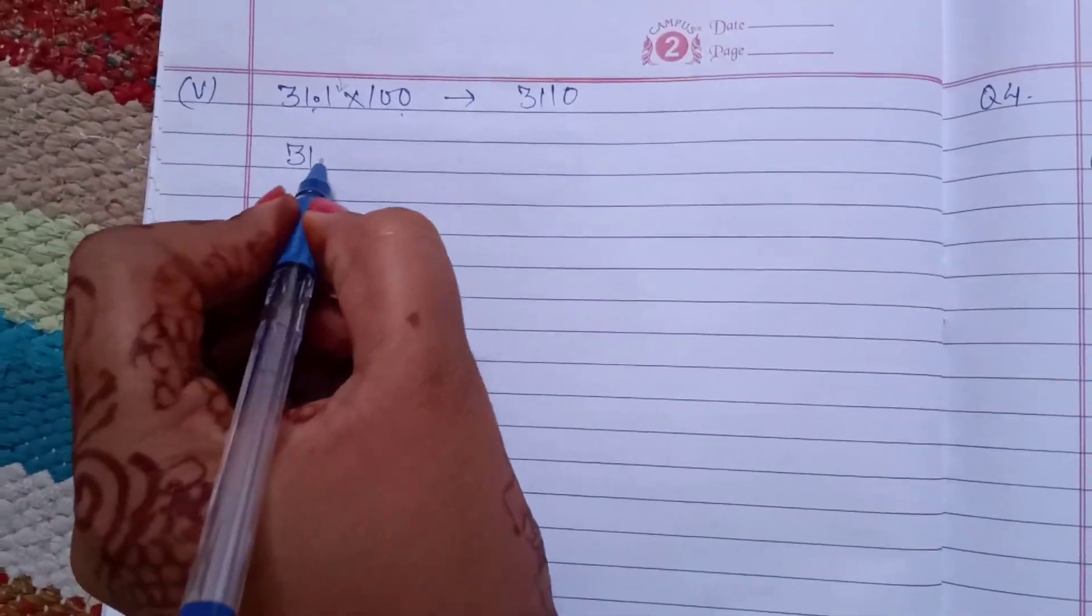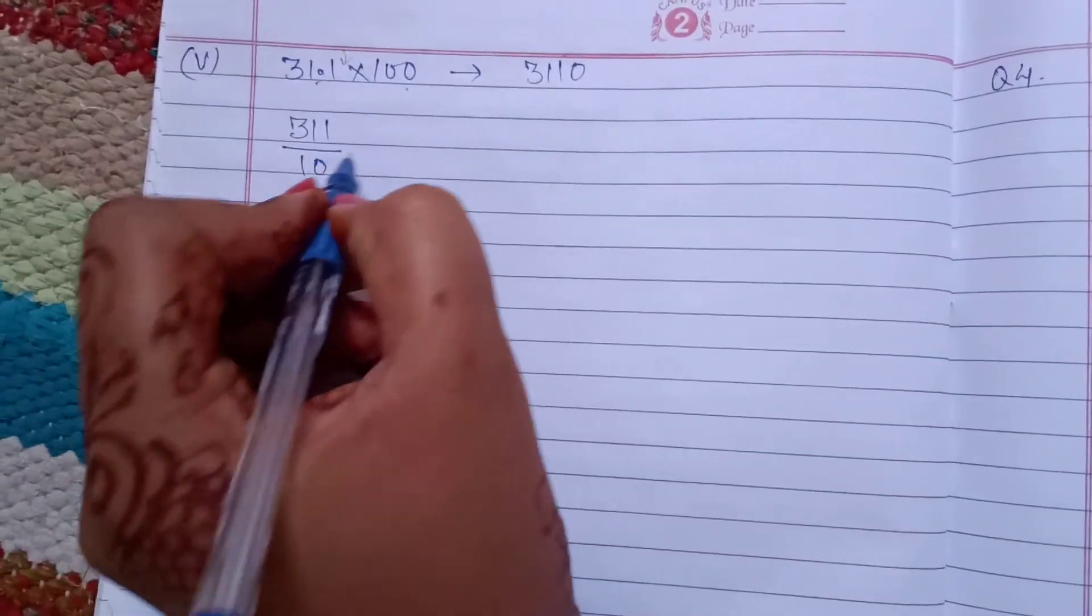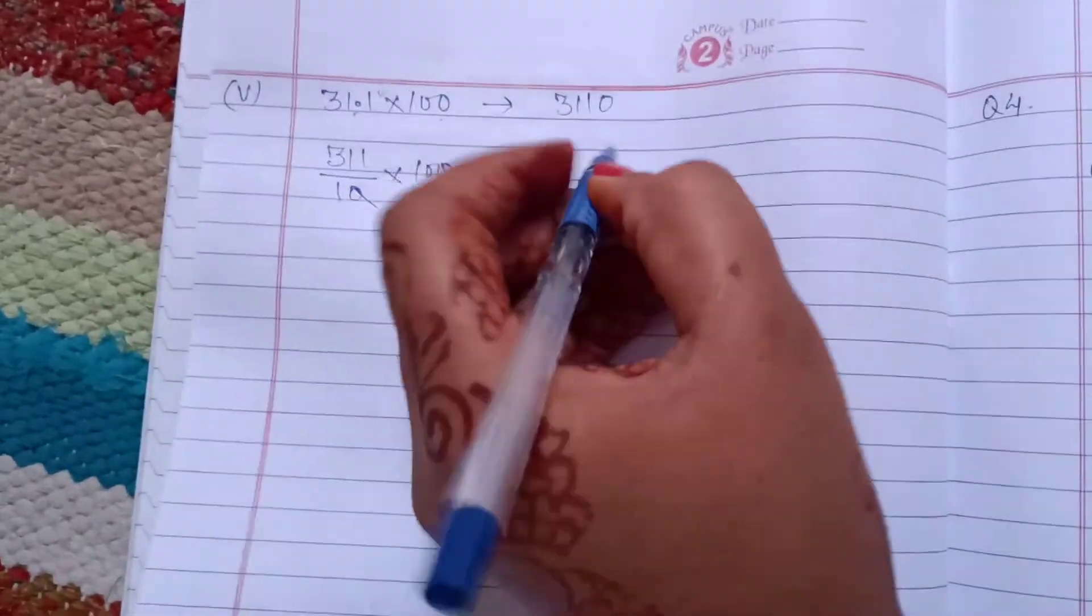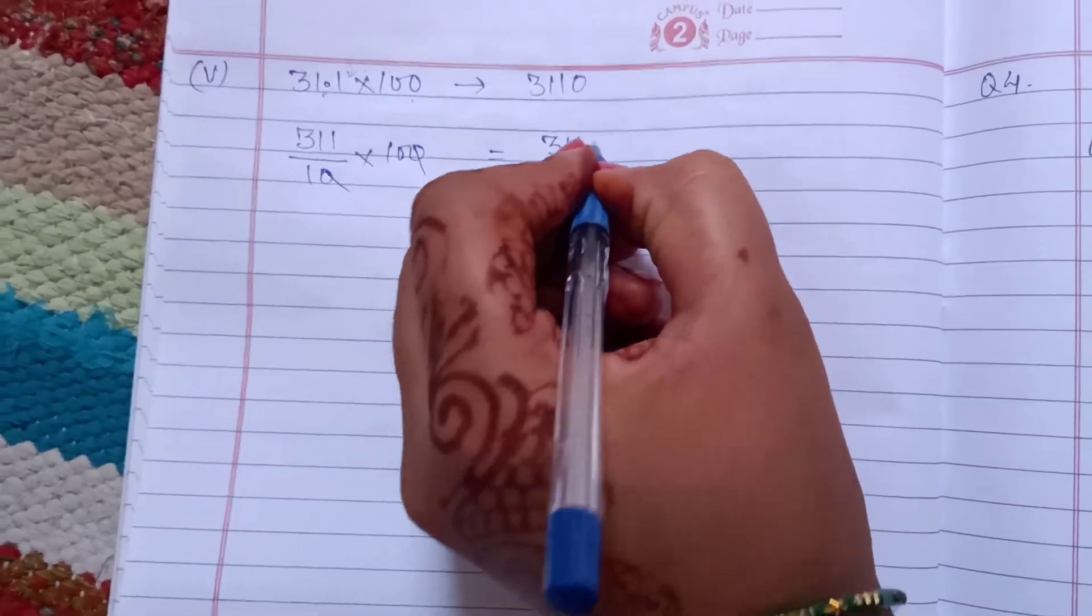Second method is 3110 over 10 into 100. This cancel, and after multiplication you get 3110.